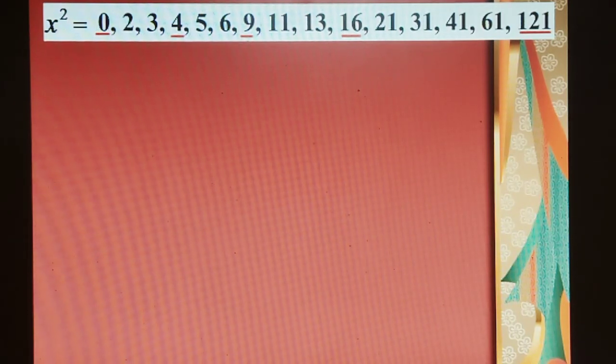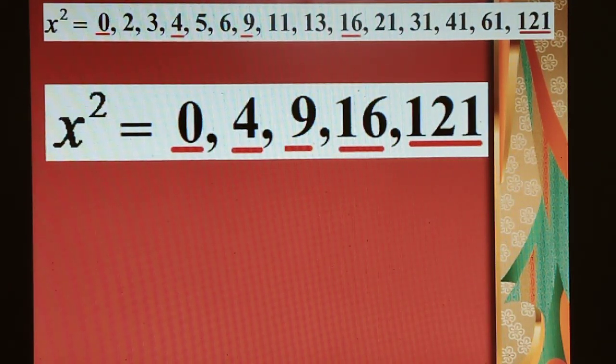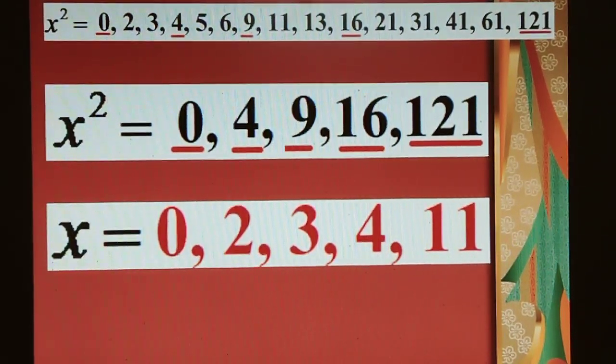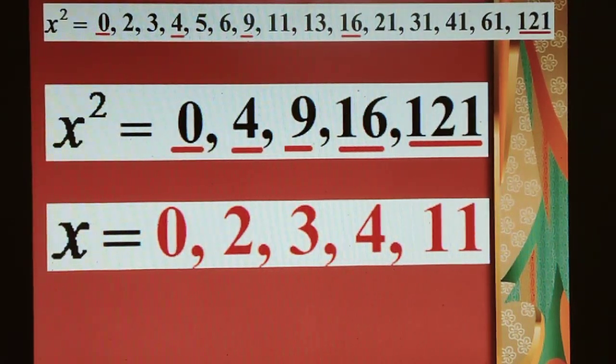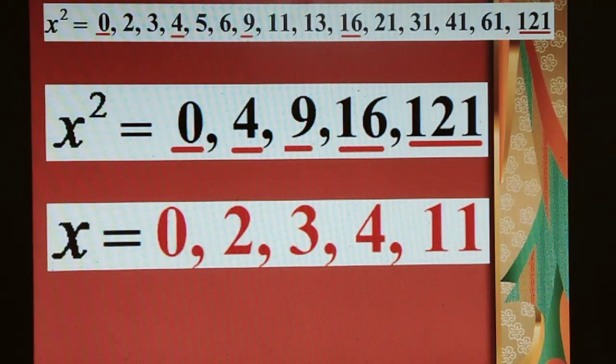We need x to be an integer, which means x² must be a perfect square. But out of all these values of x², only 0, 4, 9, 16, and 121—these five values are perfect squares. So what is x? The value of x is: 0, 2, 3, 4, and 11.